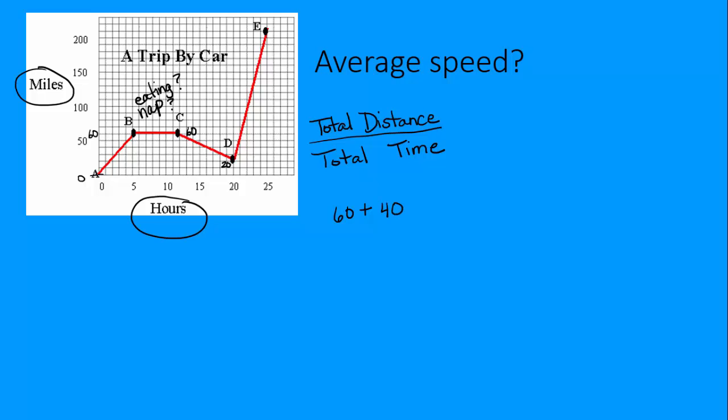I'm not going to call it negative 40, just 40. And then finally, from D to E, we go from mile marker 20 to mile marker 210. So if we subtract those, the total distance covered is 190 miles. We're going to add those together to get our total distance for the whole trip.